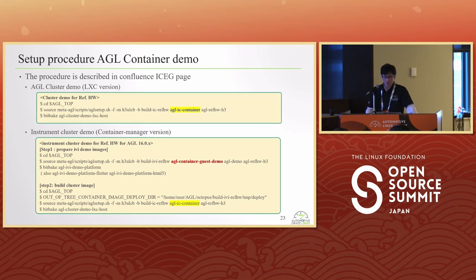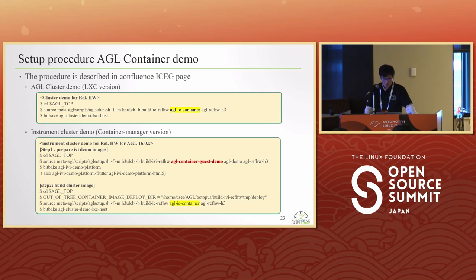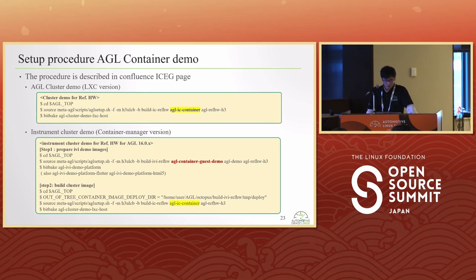Here is the setup procedure for the AGL container demo, described in the conference documentation. The upper side is the cluster demo using the LXC version. The bottom side is the instrument cluster demo including the container manager version. Please note the difference: the instrument cluster demo requires an existing AGL IVI demo platform. The user needs to build and create the image as prepared, then define the image deployment directory, and build the cluster demo.